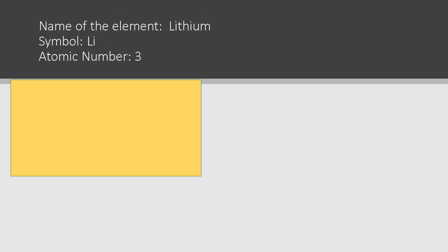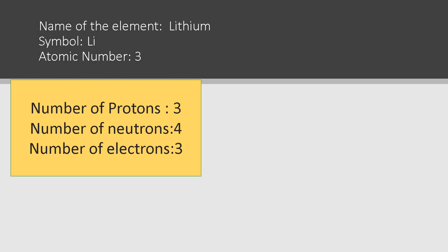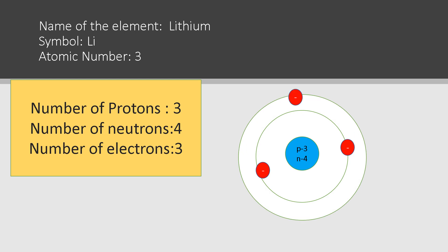Next is lithium. Symbol is Li, atomic number three, protons three, neutrons four, and electrons three. Its electronic configuration is 2, 1. It needs to lose one electron to attain stability and get an electronic configuration like the noble gas helium. Thus its valency is one, as lithium has a single valence electron in the second principal energy level.